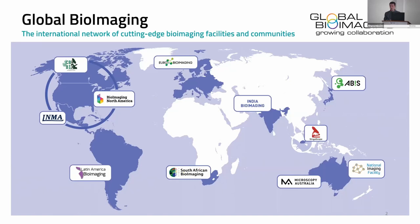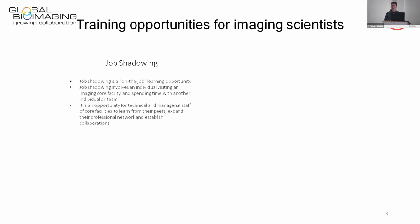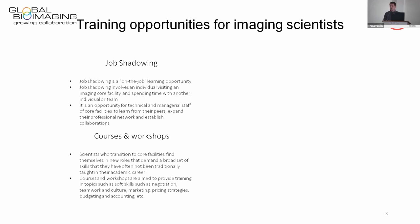His role at Global BioImaging is to manage a training program involving job shadowing, organizing training courses for core facility staff, and managing and scaling up their training resource. The coordination team, based at EMBL in Heidelberg, is relatively small. He categorizes trends in training imaging scientists into four avenues: job shadowing, courses and workshops, independent learning, and mentoring.